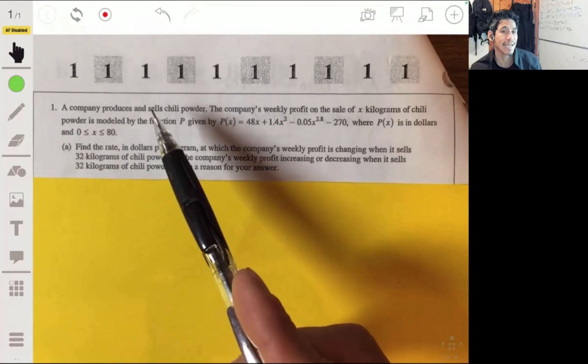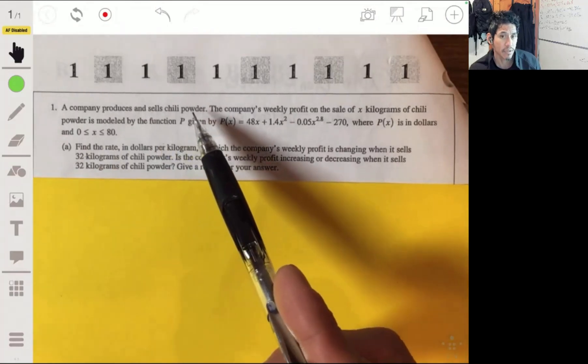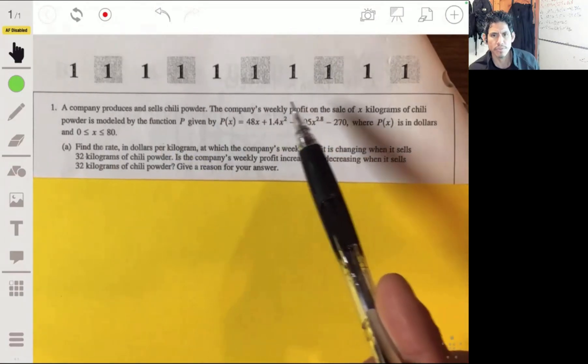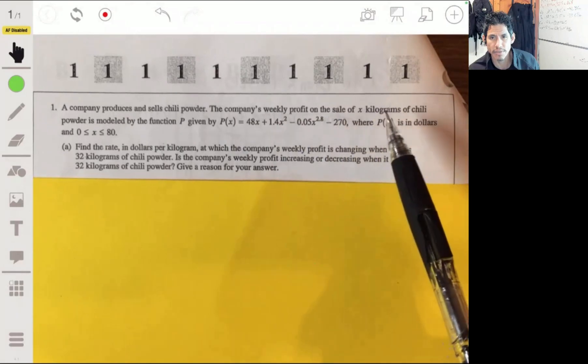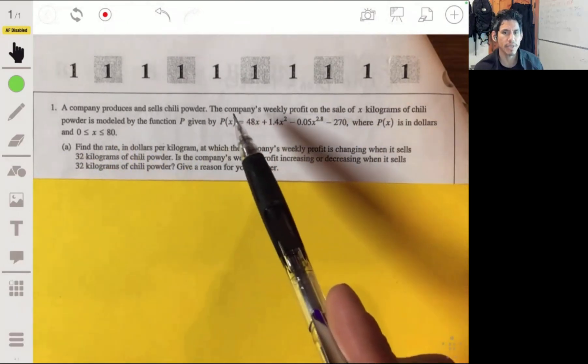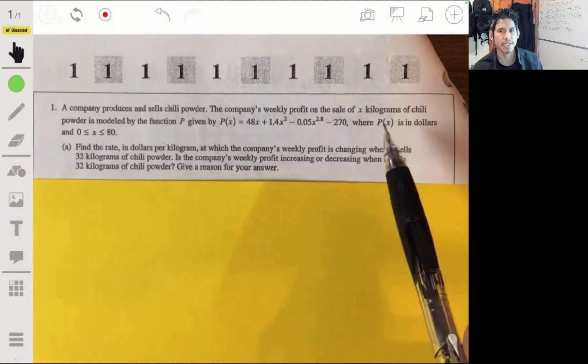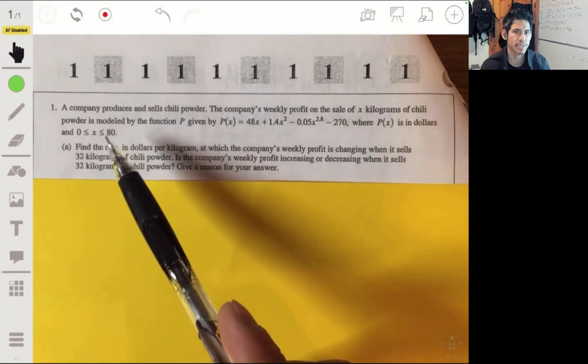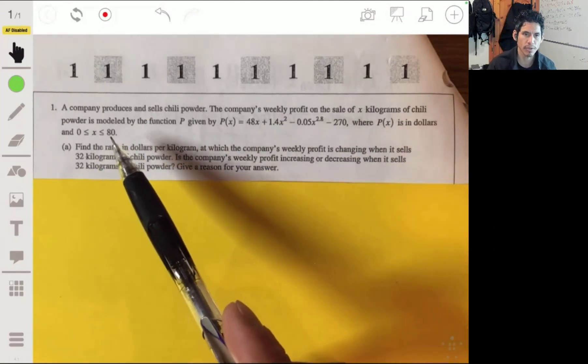We got a company that produces and sells chili powder. The company's weekly profit on the sale of X kilograms of chili powder is modeled by the function P, where P(X) is in dollars and X is between 80 and 0.